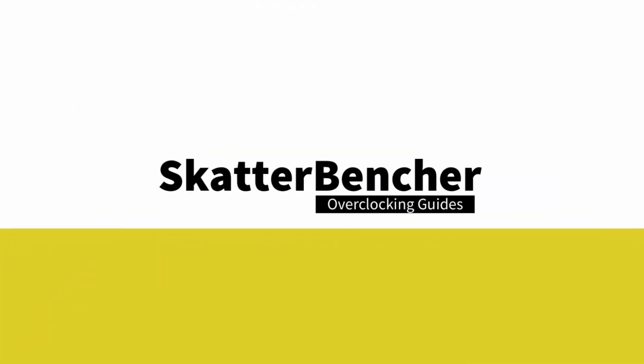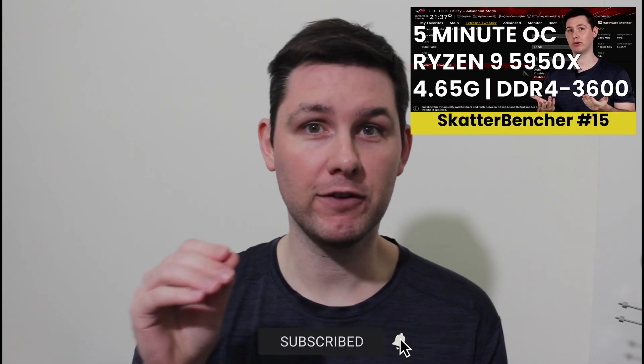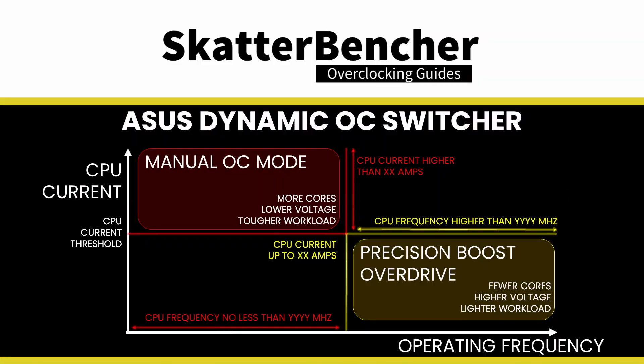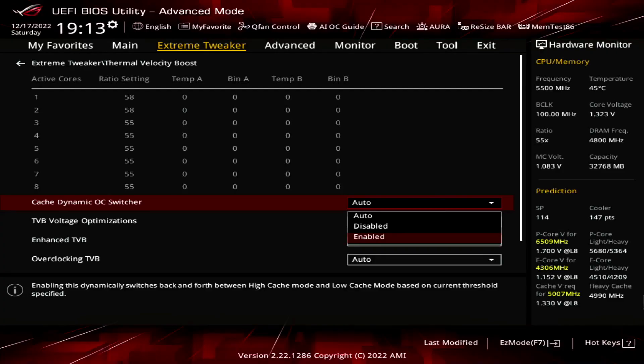Asus Dynamic OC Switcher is a notable feature on Asus AMD motherboards, first introduced on the Crosshair 8 Dark Hero motherboard, and first shown in Scatterbencher number 15. On AMD platforms, it allows runtime switching between OC and PBO modes to maximize overclocking for single-core and all-core workloads. Cache Dynamic OC Switcher is similar in that it enables runtime switching at a specific trigger point.